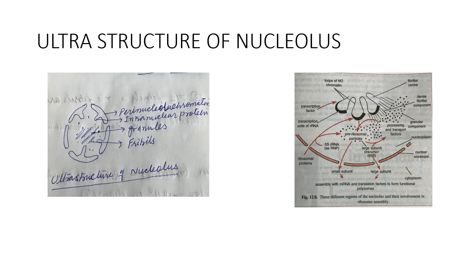Ultrastructure of Nucleolus: The nucleolus has four main components. Number 1 is the Matrix or Pars Amorpha. Number 2 is Nucleolar Associated Chromatin. Number 3 is the Fibrillar Region. Number 4 is the Granular Region. The Matrix or Pars Amorpha is a homogenous part and it contains scattered granules and fibrils.